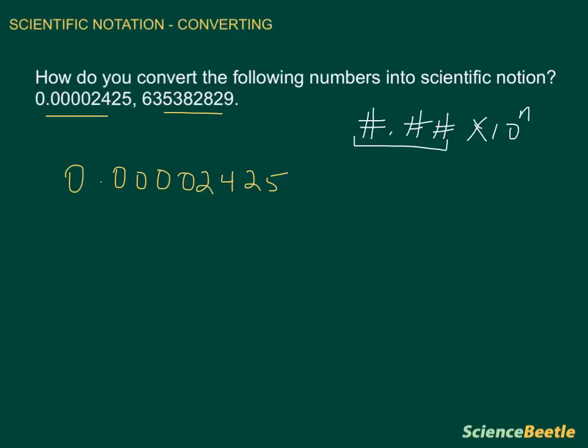So if we look at the number here, the first three significant figures are these right here — the two, the four, and the two. What we'll do now is place a decimal where we would like the decimal to be. Then we count the spaces between where we want the decimal to be and where the decimal originally is. So we count the spaces: one, two, three, four, five.